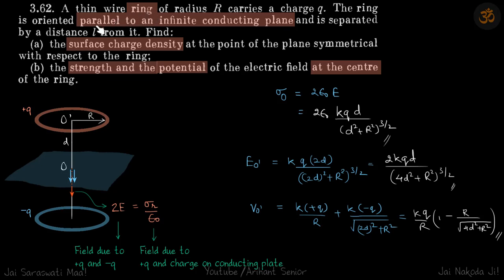We are given a ring which is kept parallel to an infinite conducting plane. We need to find the surface charge density induced on the plate and strength and potential of the plate at this point at the center of this plate. So let's find the surface charge density first. They are asking it on the middle point only.